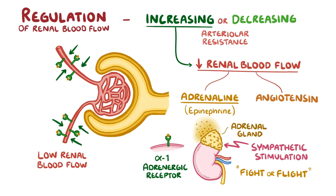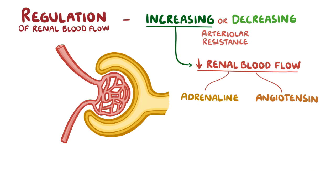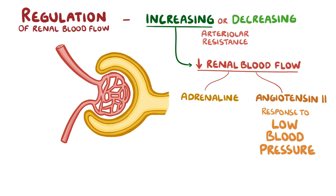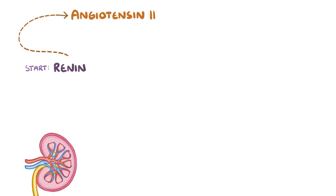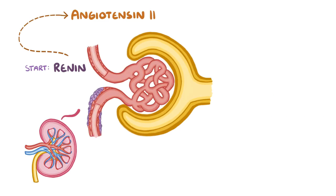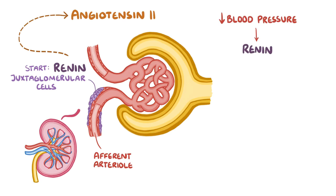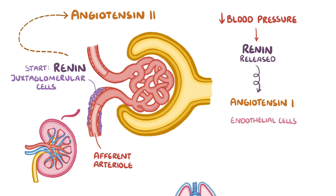Angiotensin 2, on the other hand, is synthesized in response to low blood pressure by endothelial cells lining the blood vessels throughout the body. Angiotensin 2 is the final product in a cascade that starts with renin, an enzyme produced in the kidneys by specialized smooth muscle cells called juxtaglomerular cells, found in the walls of the afferent arterioles. When there's low blood pressure, renin is released into the blood, where it cleaves angiotensin 1 from angiotensinogen.